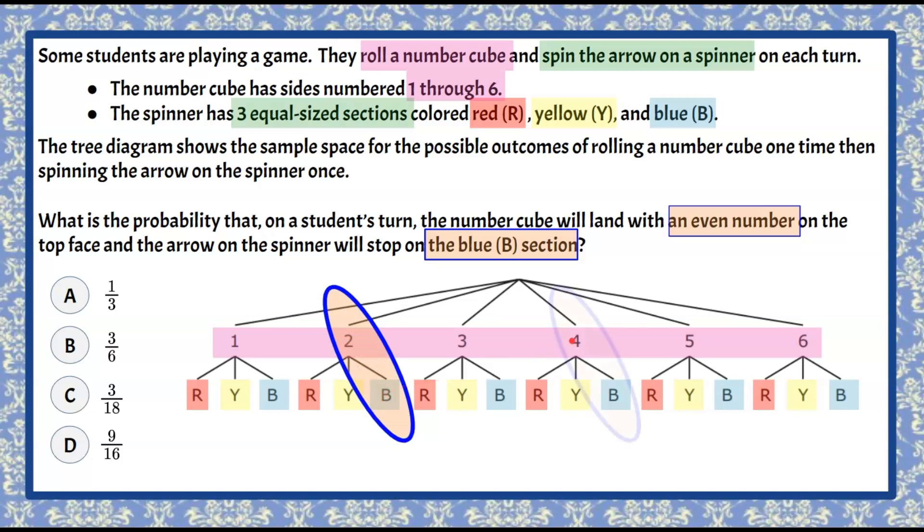We go to four in our tree diagram because it's even, the next even number after two, and four has one possible outcome spinning blue.